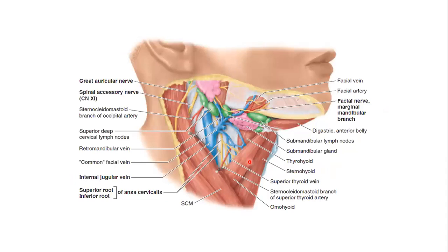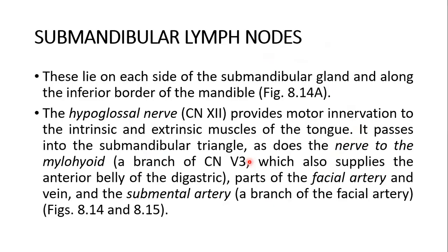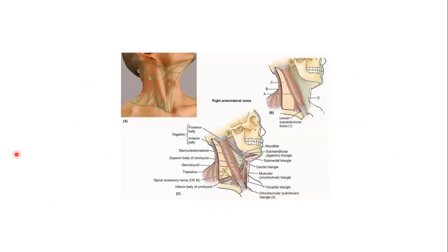So then we move on, continuing to talk about the hypoglossal nerve. It provides motor innervation to the intrinsic and extrinsic muscles of the tongue — I'm going to study the tongue and this nerve separately as well. So this is the motor nerve to the tongue musculature — the hypoglossal nerve, the 12th cranial nerve. It passes into the submandibular triangle. Also in this triangle is the nerve to the mylohyoid, which is a branch of the cranial nerve V3 — the mandibular nerve — and also supplies the anterior belly of the digastric, along with the facial artery, vein, and the submental artery, which is a branch of the facial artery.